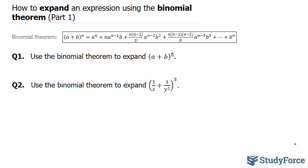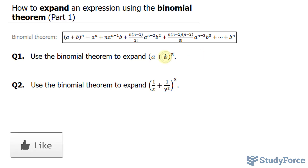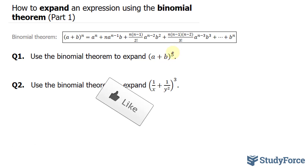I want to start off by analyzing the binomial theorem formula. Notice that the formula has an a, b, and n term. So the first thing I want to do for question one is define my a, b, and n. My a is the first term within the binomial, which is a. My b is the b term, and my n term will be five, so n is equal to five.